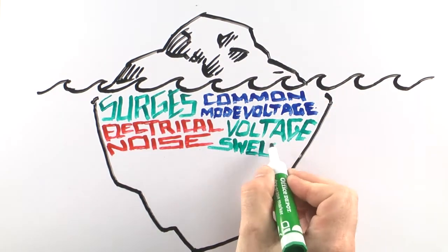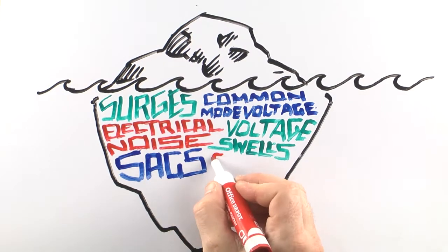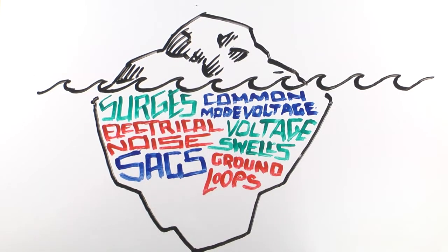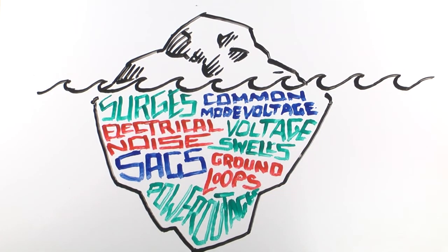PowerVar offers protection for the whole iceberg, protecting your system from surges, common mode voltage, electrical noise, voltage swells, sags, ground loops, power outages, and other disturbances.